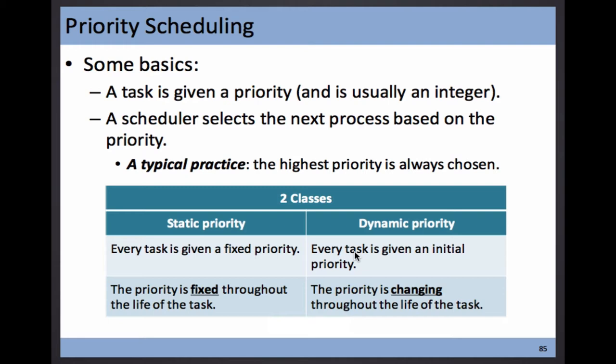Another type is called static priority. It's the time that you create a process, you define its priority. We call it static because you're not supposed to change it. Later on, I will show you some illustration — some processes using static, some processes using dynamic.